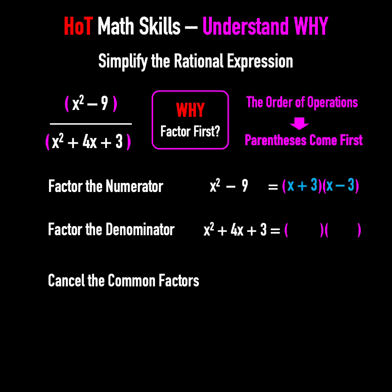Factor the denominator. Factor 3 as 3 times 1. Check: 3 plus 1 gives 4. So we factor it as x plus 3 times x plus 1.